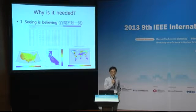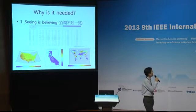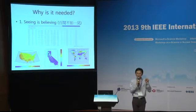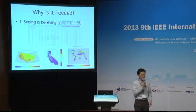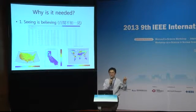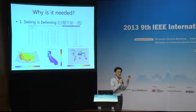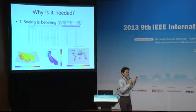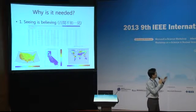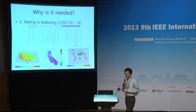Why is this needed? First, seeing is believing. When we look at text files there is lots of information but we are not sure what the data tells us. By making a map, we can get a better sense of the data and do better science.